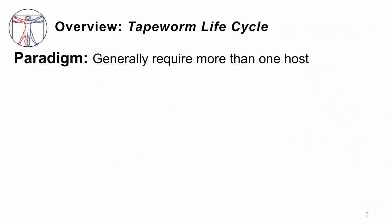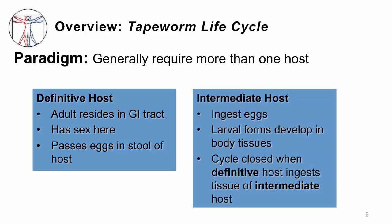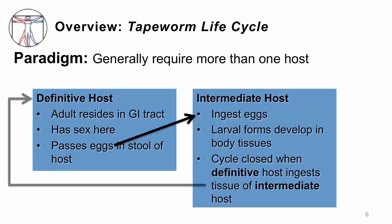The paradigm is that most of these tapeworms require more than one host. There's the definitive host — that's where the adult lives in the GI tract. By adult, we mean it has sex, and this is the host that will pass eggs in its stool. Then there's the intermediate host. By definition, the intermediate host ingests the eggs from the definitive host. This is where the larval form develops in the tissues, and the life cycle is closed when the definitive host eats the tissue from the intermediate host.